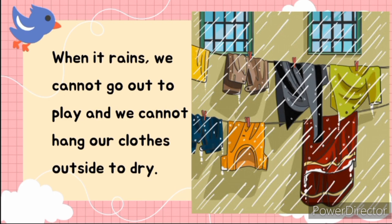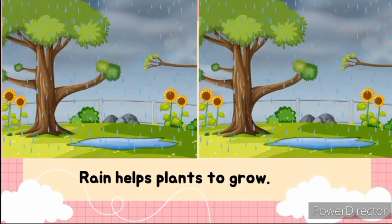When it rains, we cannot go out to play and we cannot hang our clothes outside to dry. Even when you wash your clothes, as soon as you notice cloudy weather, you go out to pack them before it rains. Rain also helps plants to grow — it is very useful because plants need rainfall to grow, just the way they need sunlight.